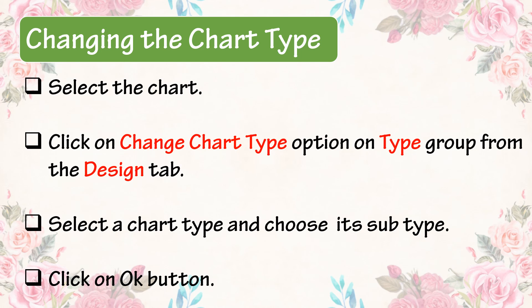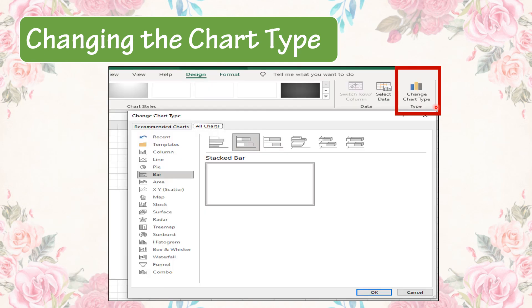Changing the chart type: to change the chart type, select the chart. Then click on the Change Chart Type option in the Type group from the Design tab. After that, select a chart type and choose its sub-type, then click the OK button. Here you can see the Change Chart Type icon which helps you to change the chart to other types.